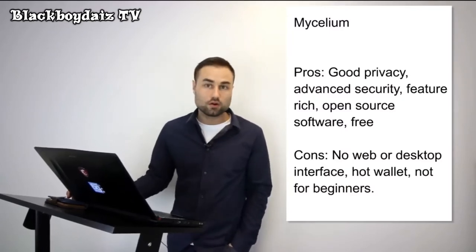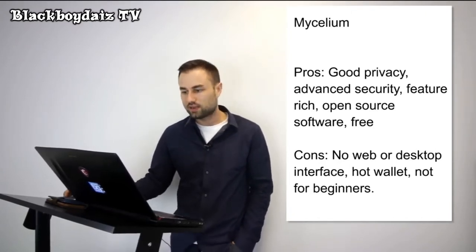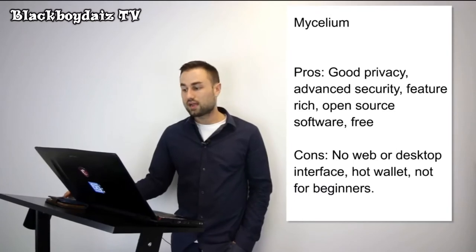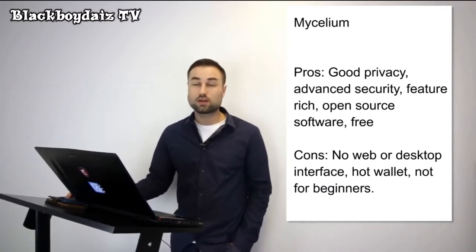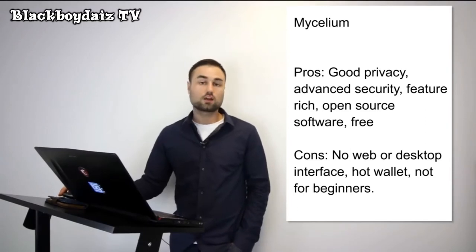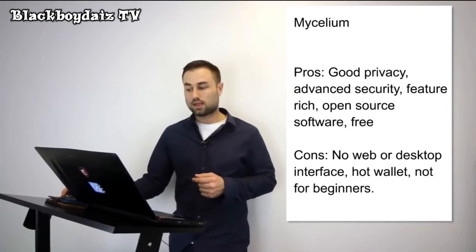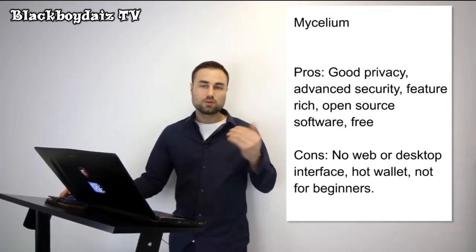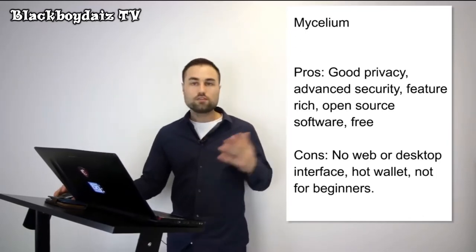Number two is Mycelium — a more advanced option. Currently it's only for Bitcoin, but they have plans for multi-currency support; Ethereum is next. It's available for both Android and iPhone. The pros are great privacy, advanced security like multi-signature where you need multiple touch points, open source, and free. The cons are no web interface, no desktop interface, it's a hot wallet, and it's not really the best for beginners. I've used it sometimes — it's not my go-to wallet, but I like it and think the user interface is really good.